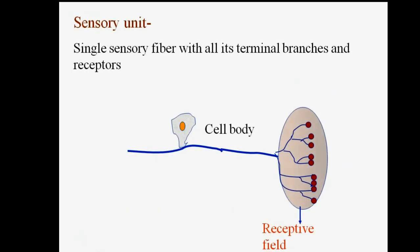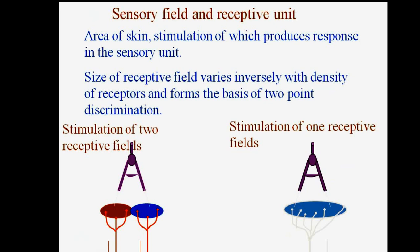Regarding the sensory unit: a single sensory fiber with all its terminal branches and receptors is known as a sensory unit. The area of skin whose stimulation produces a response in a sensory unit is the sensory field. The size of the receptive field varies inversely with the density of receptors and forms the basis of two-point discrimination — whether stimulation of two receptive fields or one receptive field is perceived as single-point or two-point discrimination.